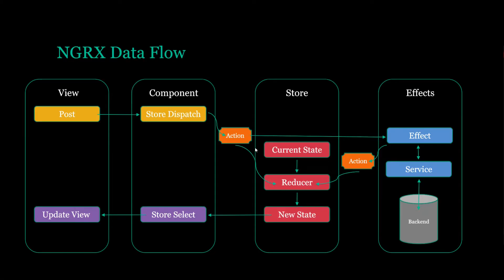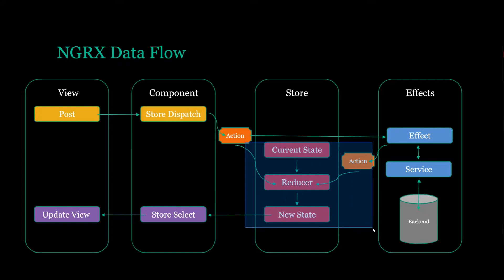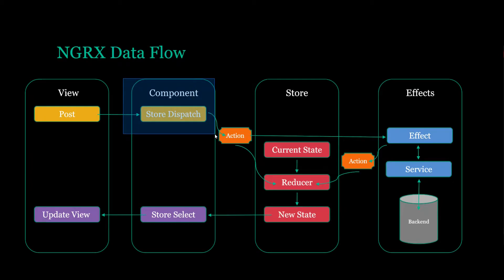Like we did before, we'll create all of our actions — we'll need a total of three — then we'll create our effect, update the store with the new product, and create a side effect for letting the user know if there's a failure at creating a product. Towards the end, we'll dispatch our action within our add product component.